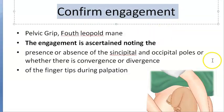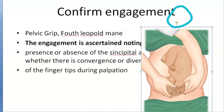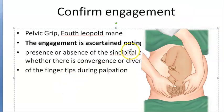To confirm engagement clinically, you use the pelvic grip — the fourth Leopold maneuver. The examiner faces the mother's feet and places their hands on either side of the lower abdomen to ascertain engagement.